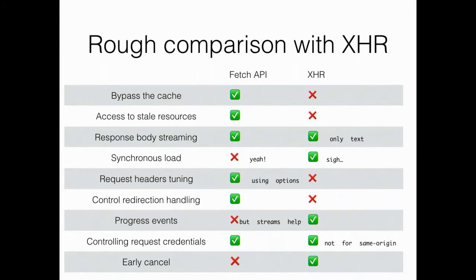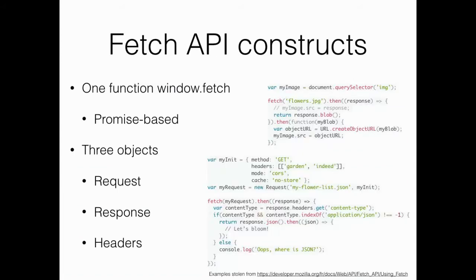Currently, I would say the situation is pretty good for Fetch API. The support is better than for XHR, and maybe there will be improvements so that some missing bits will be included in the future. For those of you not fetching every day, there's just one function to learn. You call window.fetch with a URL and you get a promise.